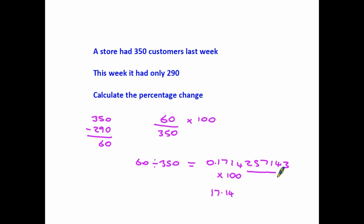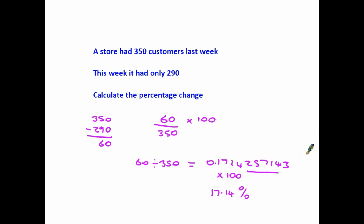The decimal does go on much longer, but usually in a question we're asked to give the answer to two decimal places, so 17.14. Even though the number has come down in this example, we are still doing exactly the same: the change divided by the original, multiplied by 100.